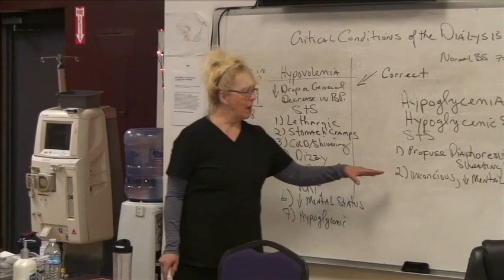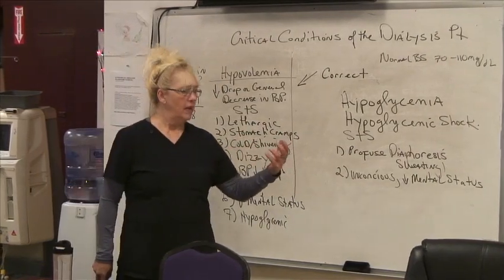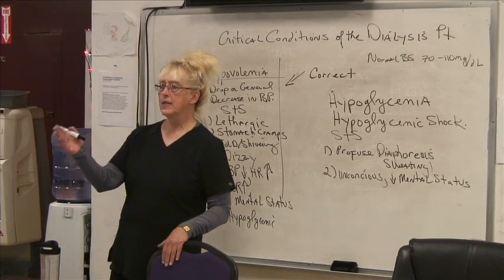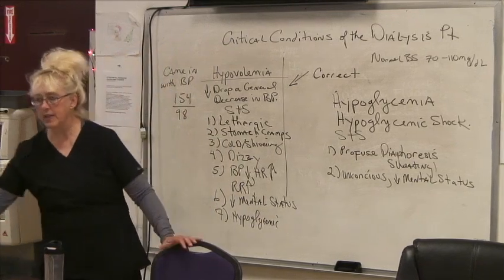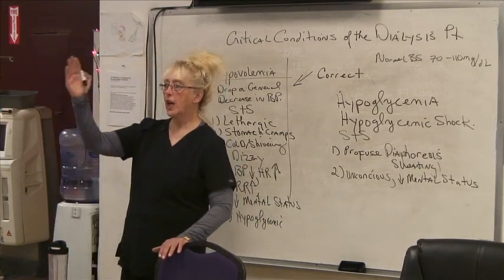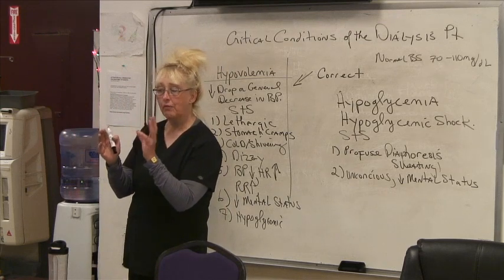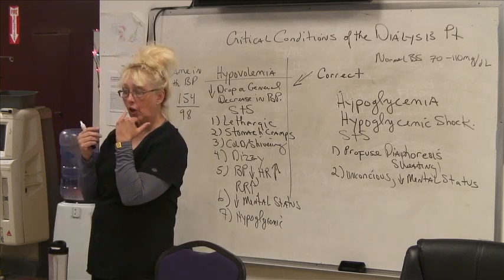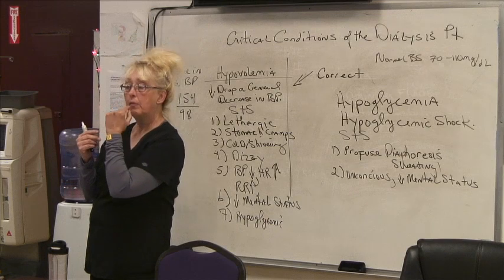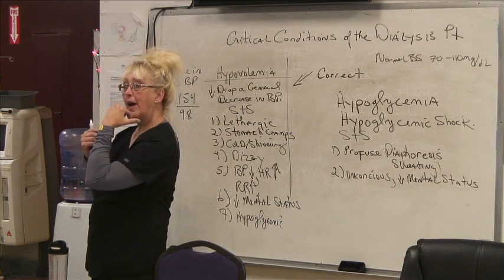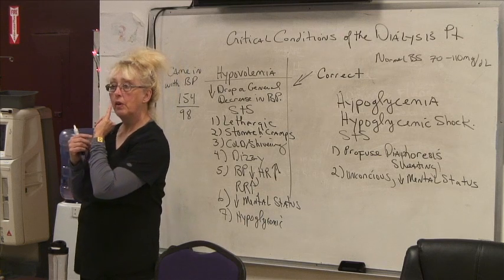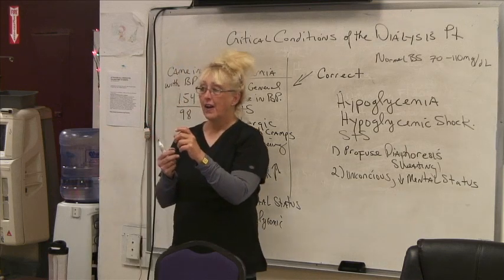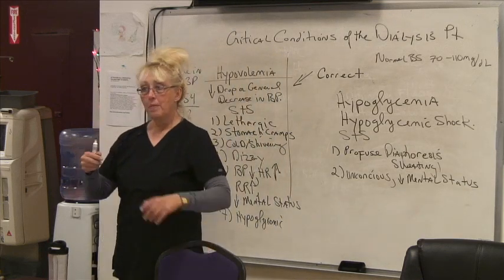For hypoglycemia: decreased mental status, profuse diaphoresis, they can become unconscious — easiest to turn around. What do we do? Orange juice, honey, and sugar, as long as they're still conscious enough to drink. You may need to hold their head up, open their mouth, place the straw far enough back where they can compress their tongue against the roof of their mouth and suck on the straw. As soon as they get that honey and sugar and orange juice in, they come right back — you may have to refill it two or three times.